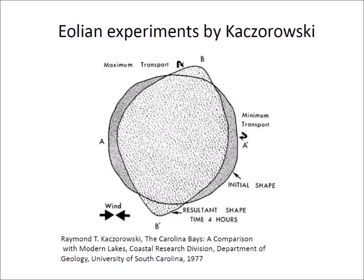In 1977 Raymond Kocharovsky tested the wind and water hypothesis promulgated by Douglas Johnson. Kocharovsky constructed a shallow circular pool on a sandy surface and set a fan to blow over the surface of the water. The caption of this image from his 1977 thesis says that the model lake changes from circular to elliptical perpendicular to the influence of opposing winds alternated every 15 minutes for a total of four hours.